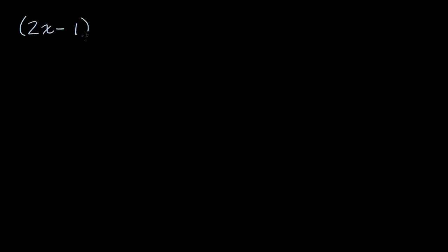Let's say that we've got the equation two x minus one times x plus four is equal to zero. Pause this video and see if you can figure out the x values that would satisfy this equation, or essentially our solutions to this equation. Now let's work through this together.